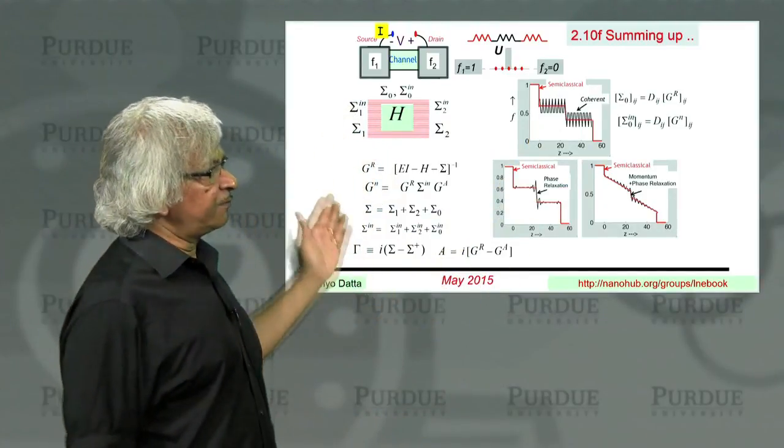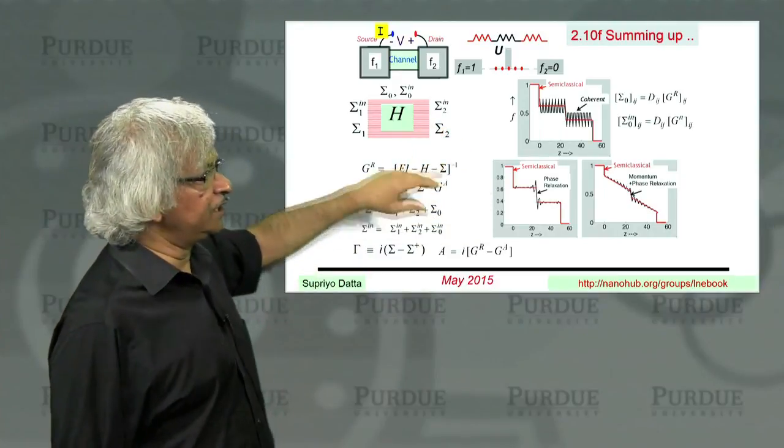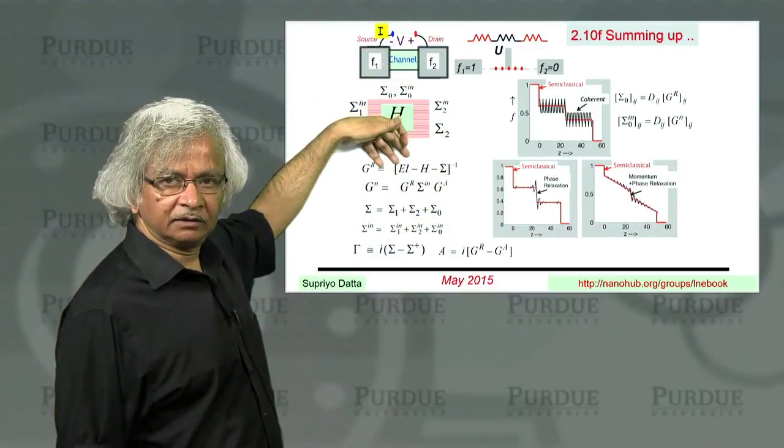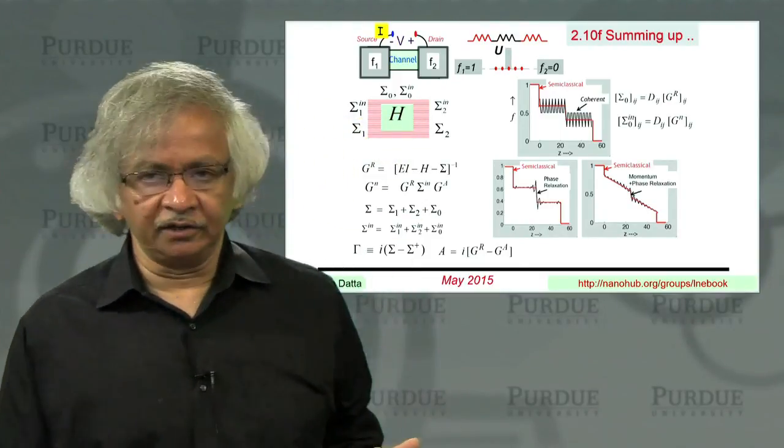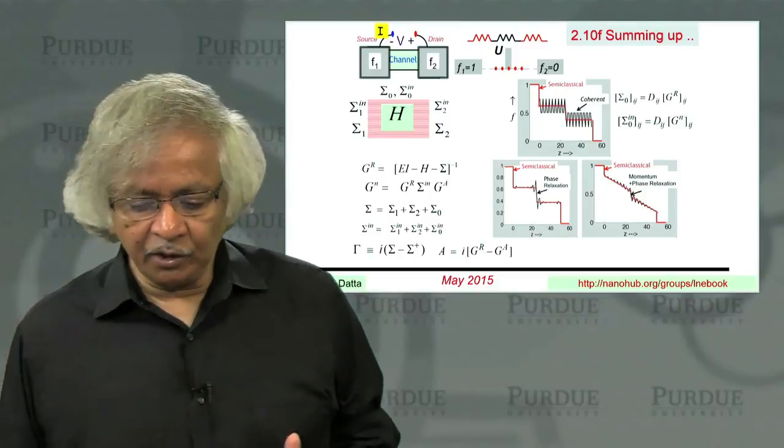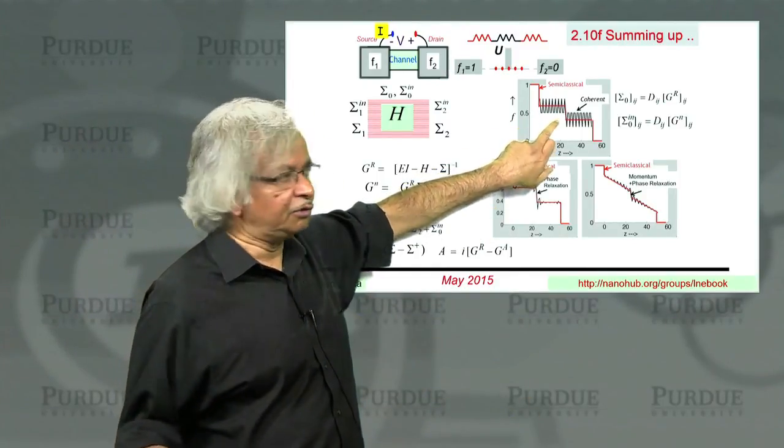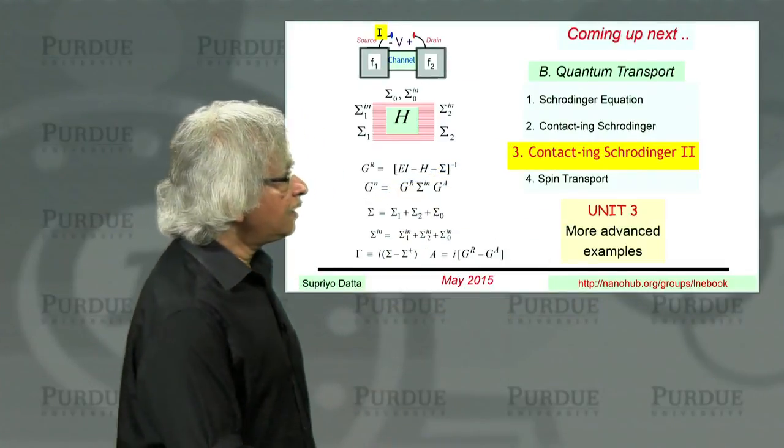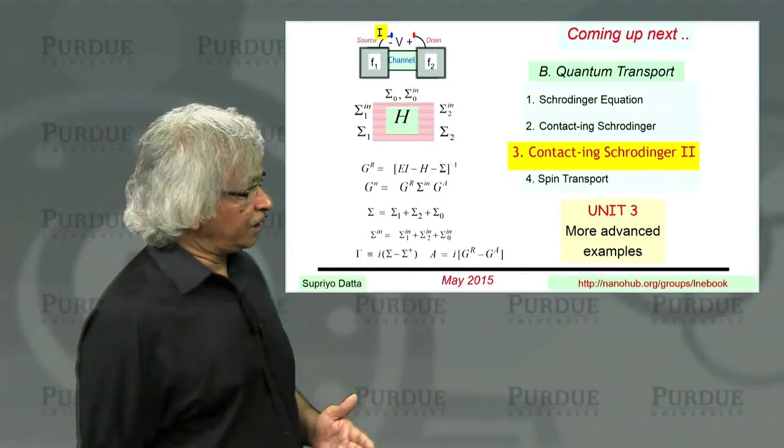The NEGF method then gives you a general way of including such relaxation processes into the model. And this is where it is different from a pure coherent theory where you would necessarily have things including interference effects. So that brings us to the end of this unit.